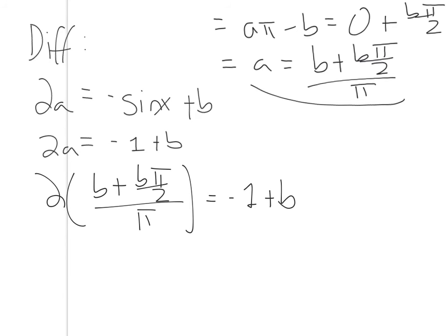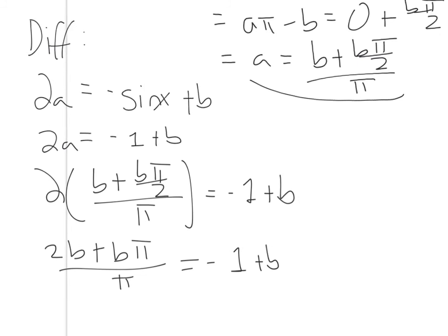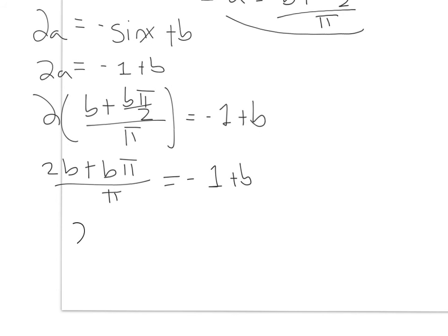I'm going to distribute the 2, so I get 2b plus b pi, all that over pi, equals negative 1 plus b. And now I'm going to multiply through by pi.